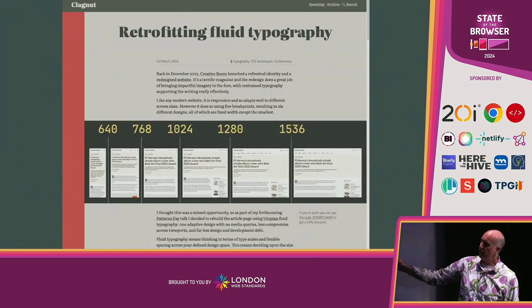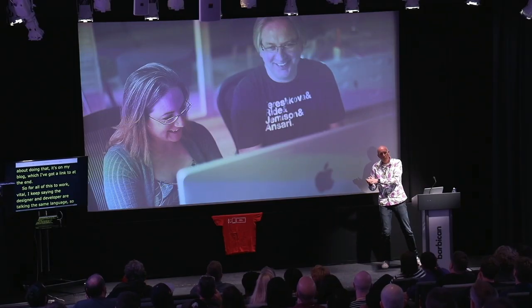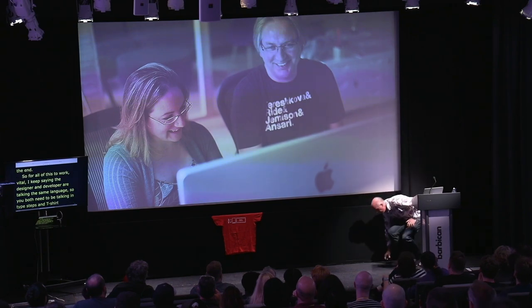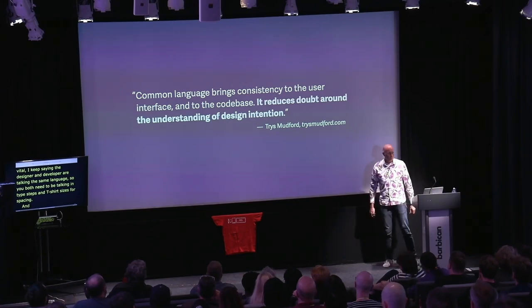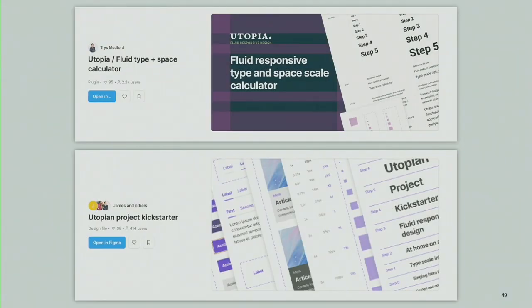I did a more detailed write-up of how I went about doing that on my blog — there's a link at the end. For all this to work, it's vital that the designer and developer are talking the same language. You both need to be talking in type steps and t-shirt sizes for spacing. As Tris — one of the developers behind Utopia — said, a common language in particular reduces doubt around the understanding of design intention, so nothing gets lost in that conversation. To help that, James and Tris have created some plugins and design files for Figma — these are free — to get you started with the process within Figma as well.